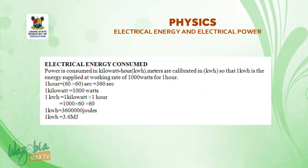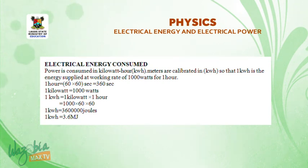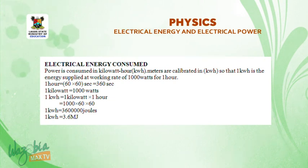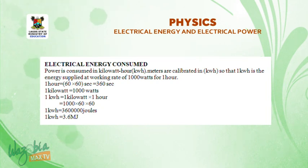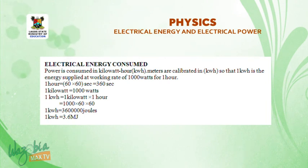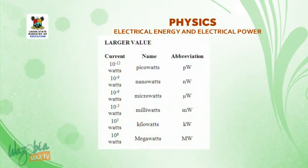Electrical energy consumed: power is measured in kilowatt-hours. The meters we use at home are calibrated in kilowatt-hours. One kilowatt-hour is the energy used at a working rate of 1000 watts for one hour. One hour equals 60 × 60 = 3600 seconds. So one kilowatt-hour equals 1000 × 3600 = 3,600,000 joules, which means one kilowatt-hour equals 3.6 megajoules.